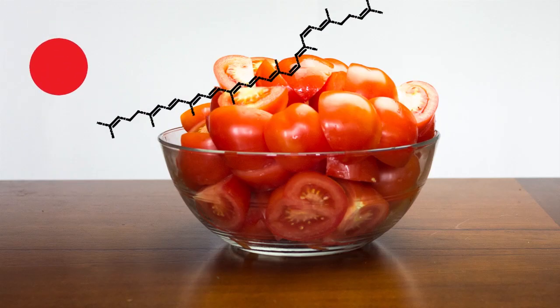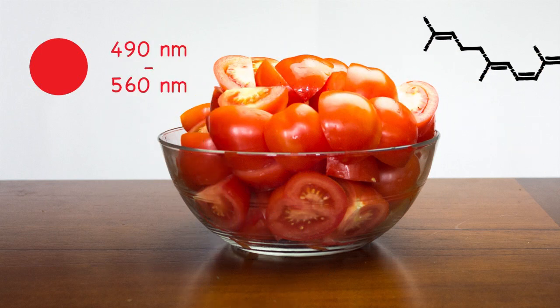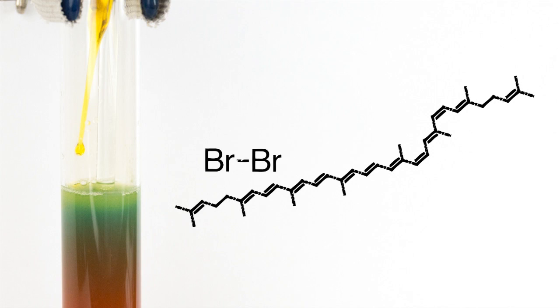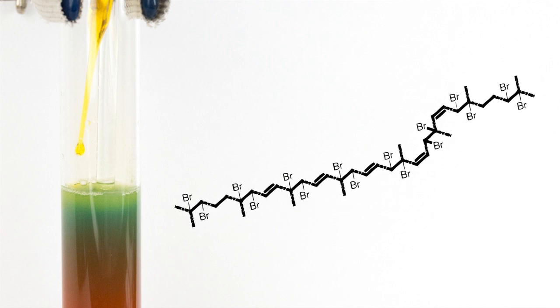Tomatoes are red because they have the carotenoid lycopene, which absorbs green light. When we add bromine water to the tomato juice, it adds to the lycopene and removes double bonds in the molecule, which means it absorbs a shorter wavelength of light.